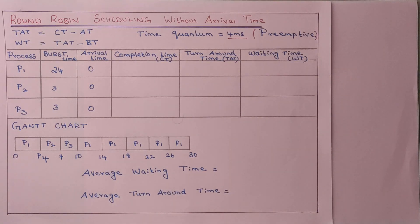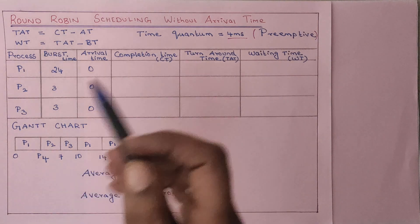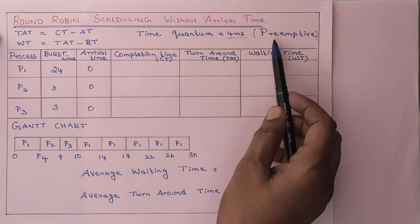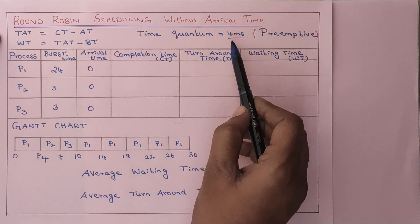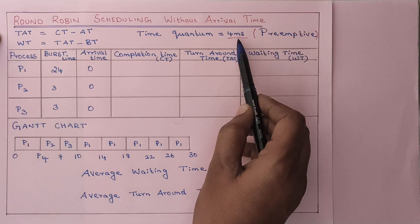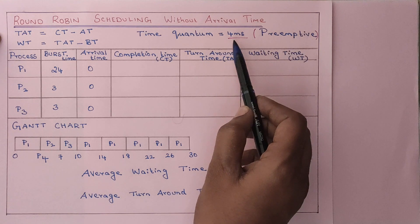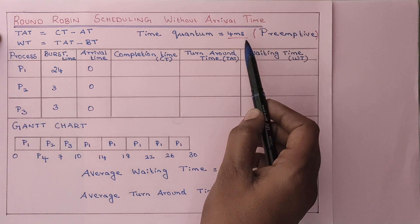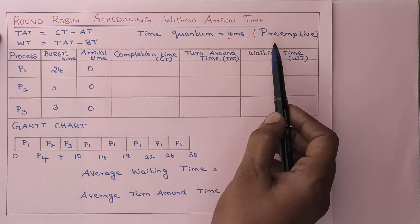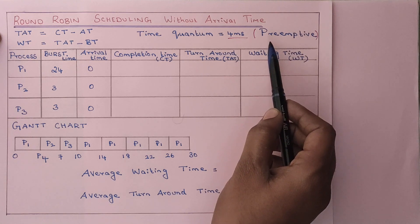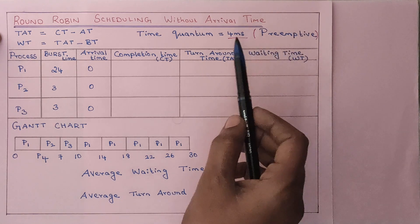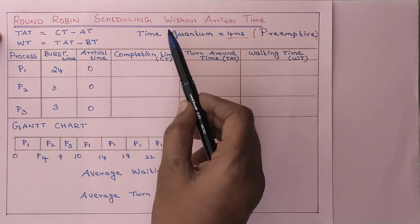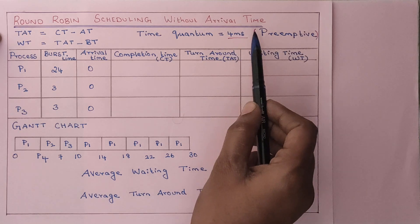Hello everyone. Now we will discuss about the topic called round robin scheduling without consideration of arrival time. Round robin is a preemptive scheduling because it will allocate a certain time to the processor. Even if the process may or may not complete its job, the control will transfer to the other process. It does not worry whether the process gets completed or not — it stops the current process and goes to the other process. That is why round robin is a preemptive scheduling.